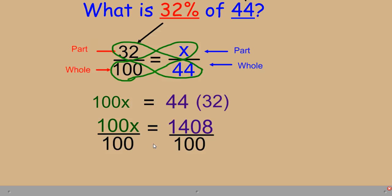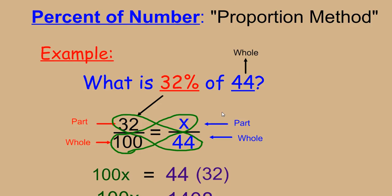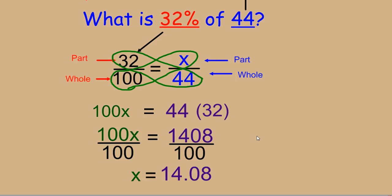When we divide both sides by 100, we end up with x equals 14.08. So that is how you use the proportion method to solve percent of a number problems. The cross products using inverse operations will help you to find the solution.